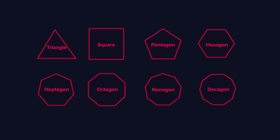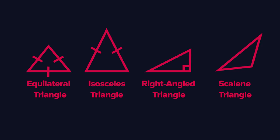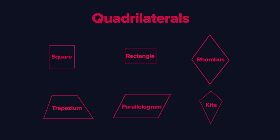Depending upon how many sides they have, different polygons have different names. Starting with three sides — I'm pretty sure you already know these are called triangles. There may be different types, but they all have three sides and three angles. Next come quadrilaterals: four sides, four angles.